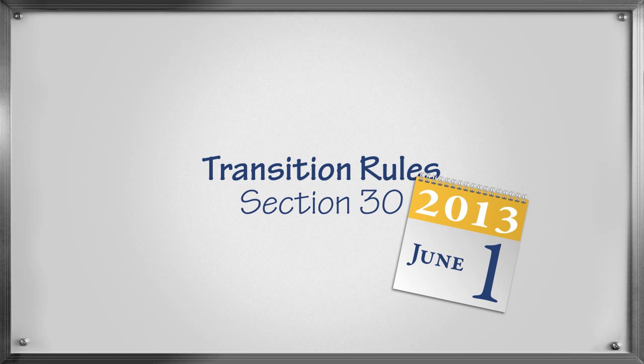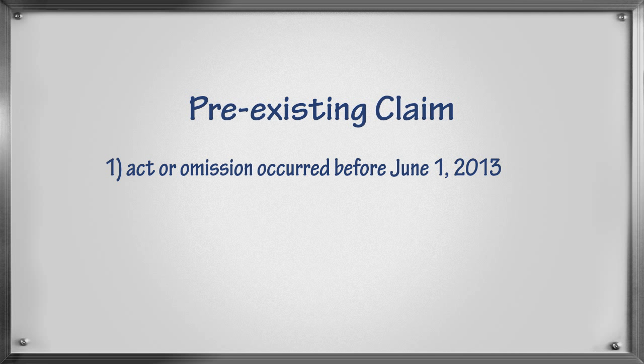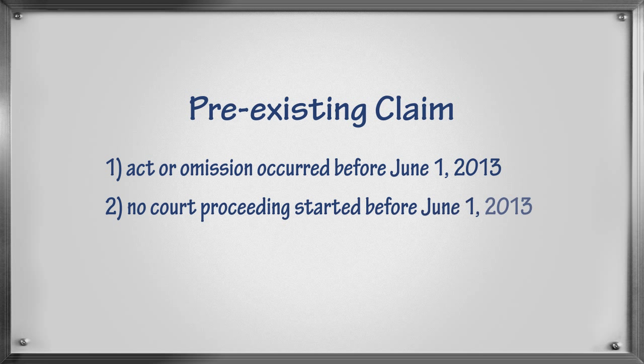When you look at the transition rules, you may be wondering: when do these apply and how do they work? There are a few things to keep in mind. The first is that the transition rules only apply to pre-existing claims. A pre-existing claim is defined in the new act as a claim that is based upon an act or omission that occurred before June 1, 2013, but for which a court proceeding was not started before June 1, 2013.